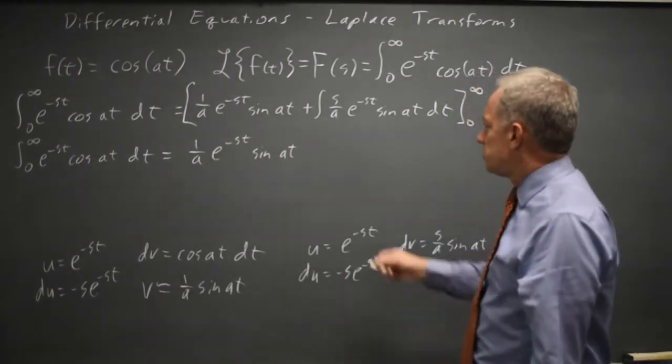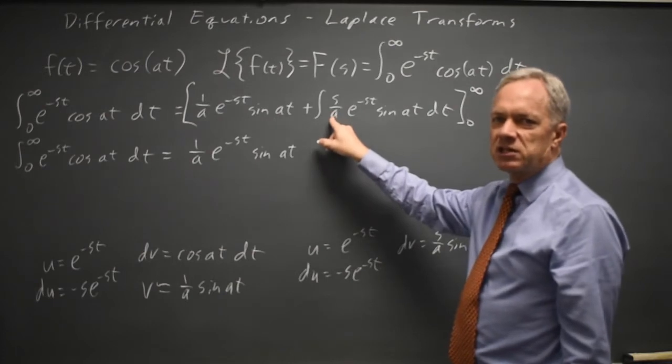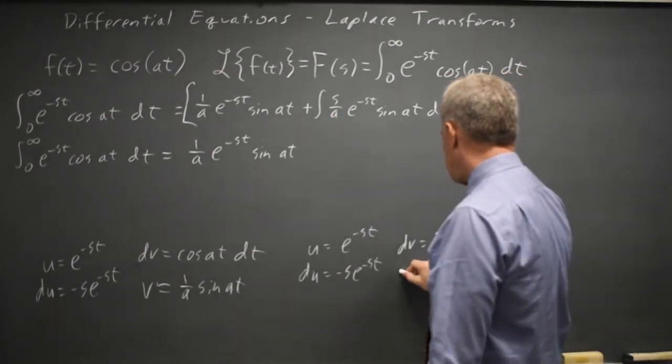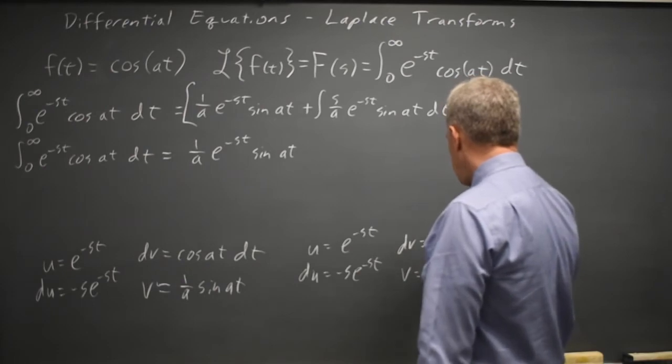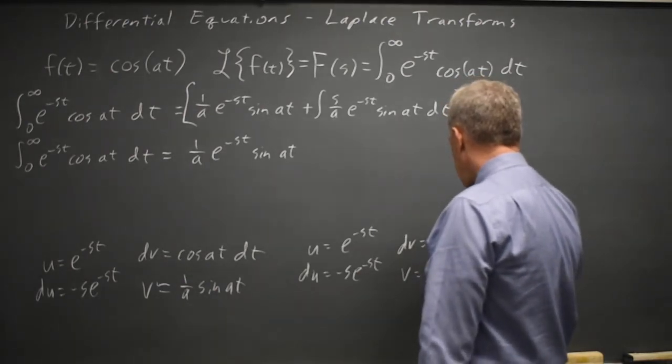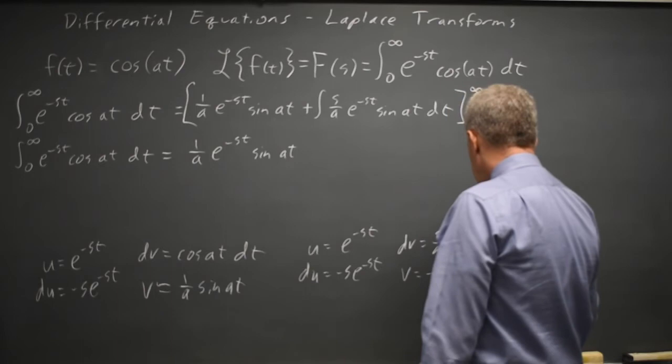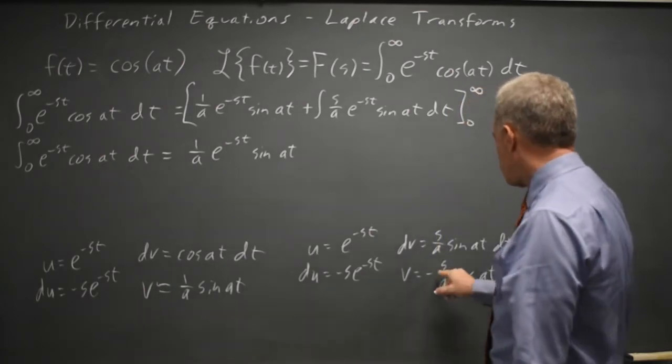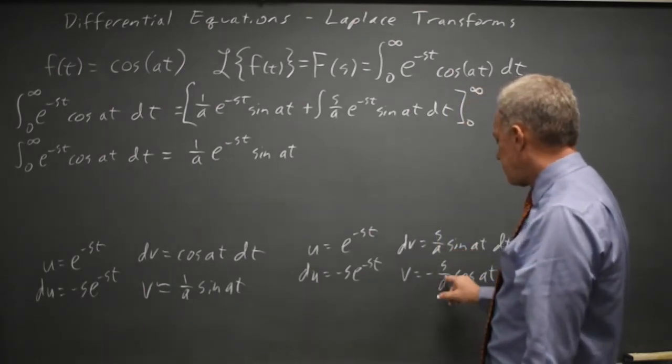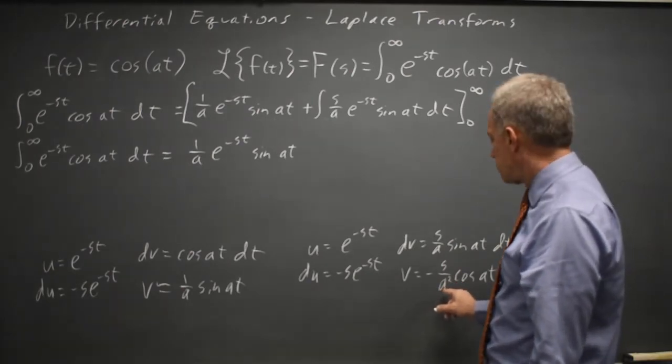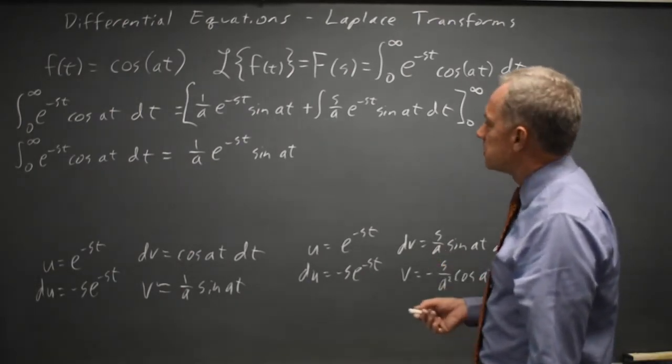And I put the coefficient inside my integral because I'm less likely to forget to distribute it if I do that. So v is negative s over a squared cosine a t. Derivative of negative cosine is positive sine. The chain rule gives me an a that cancels one of the a's from a squared to just give me a denominator of a. So that's correct.